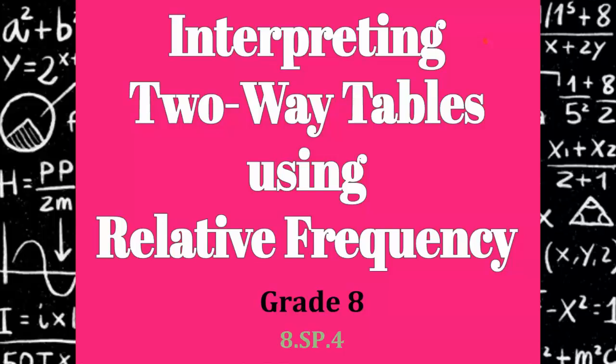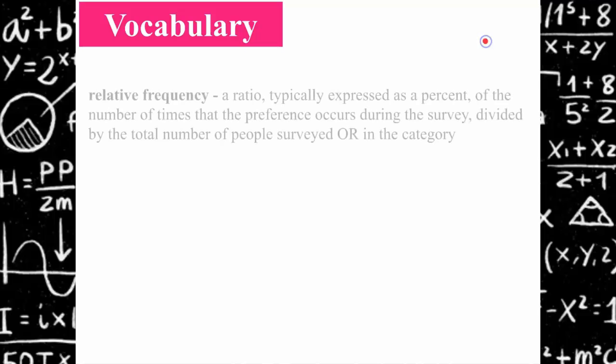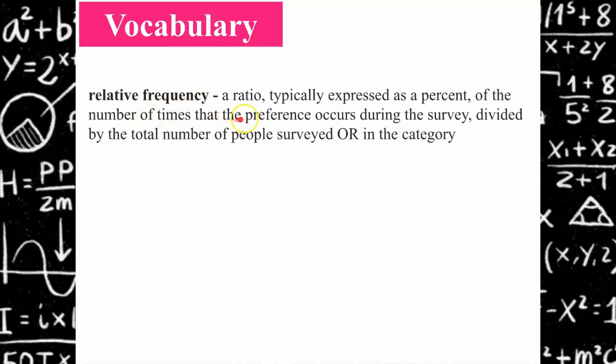Welcome to our lesson on interpreting two-way tables using relative frequency. Relative frequency is a ratio typically expressed as a percent. It's a ratio of the number of times that the preference occurs during a survey divided by the total number of people surveyed or the total number of people in a specific category.